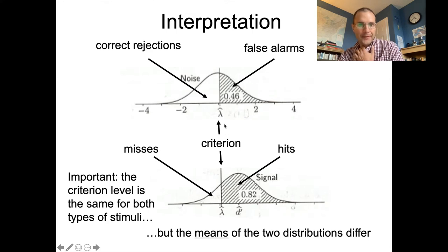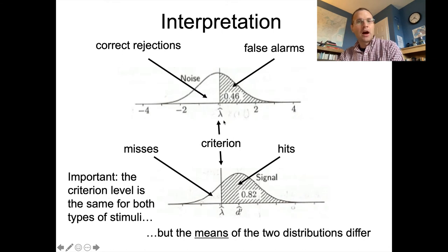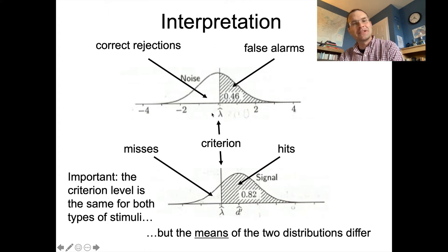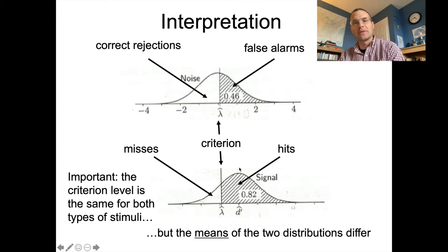What's crucial here is: number one, the criterion does not change depending on what you're listening to — you set it internally and apply it across the board. And secondly, there's a difference in the means of the two distributions between the signal distribution and the noise distribution. What we're going to try to figure out next is how to measure the distance between those two means on this perceptual evidence dimension. There's a clue in these diagrams because the dimension is labeled in terms of standard deviations from these means.